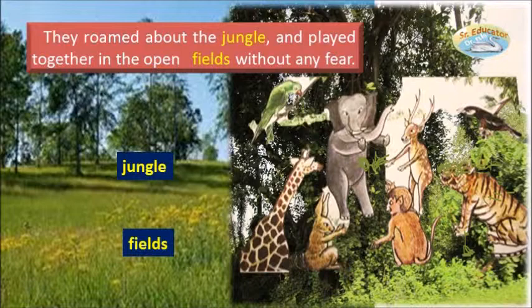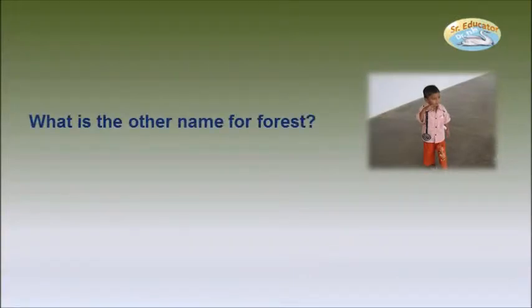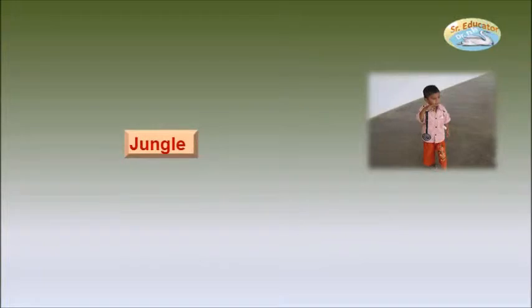'Jungle' and 'field' — these two words indicate the names of places. The word 'fear' is also a noun; it indicates quality. Children, what is the other name for forest? Jungle — good, it is the name of a place.